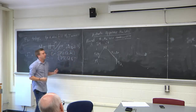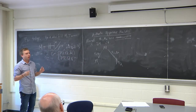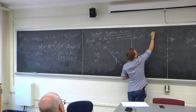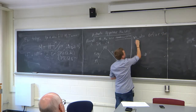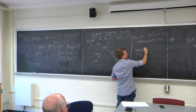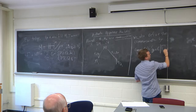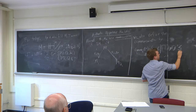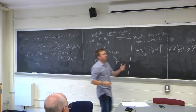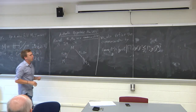If you remember what Mostow-Prasad rigidity tells you: if you have isomorphic discrete groups in the isometry group and N is bigger than two, then they're conjugate inside the isometry group. This leads to the definition of the commensurator — the set of all elements g of G such that the intersection of the original lattice with the twist of the lattice has finite index in both.